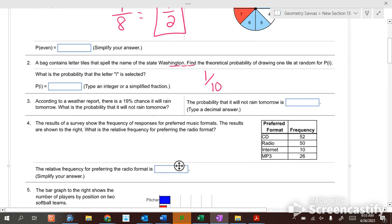According to the weather report, there's a 19% chance it will rain tomorrow. What's the probability it will not rain tomorrow? 81%. What is that as a decimal answer? Point eight one. Not point oh eight one. Point eight one.